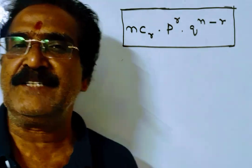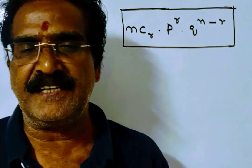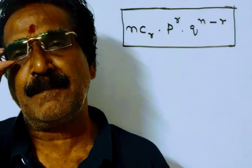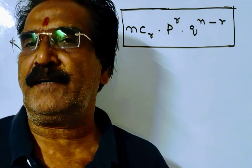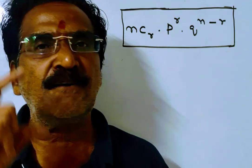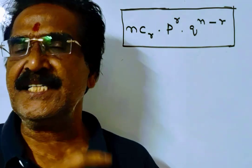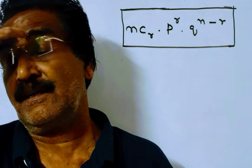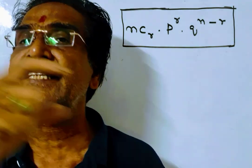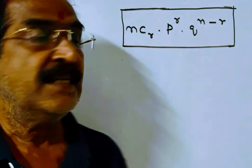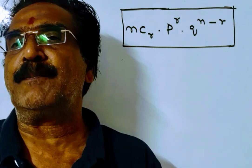Hi friends, good morning. Please look at the next problem in probability. A person can hit the target five times out of eight shots. If he fires 10 shots, what is the probability that he will hit the target twice?